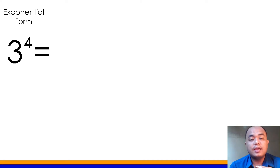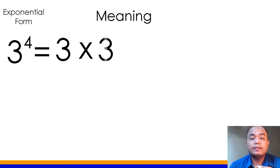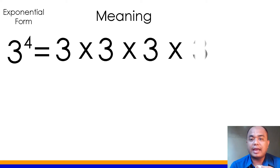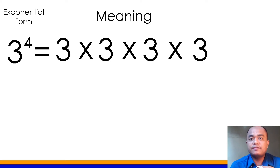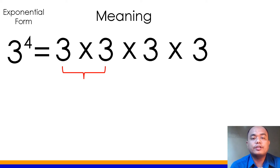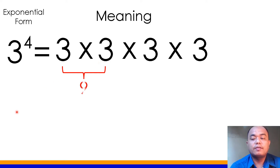So we could also say that this means 3 times 3 times 3 times 3. Now, how do we get the value of 3 to the 4th power? We will multiply each number. Let's multiply first 3 times 3. And 3 times 3 will give you how much? It's 9. Next, we will multiply the product we get, which is 9, to the next factor, which is 3.